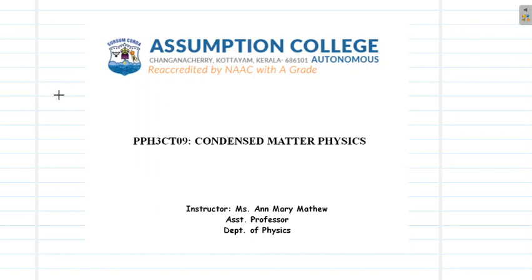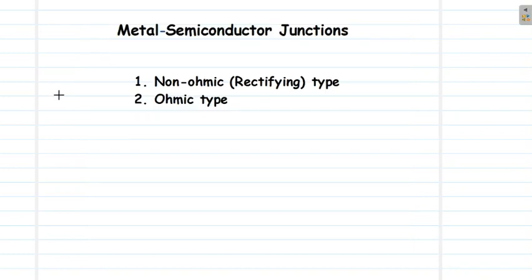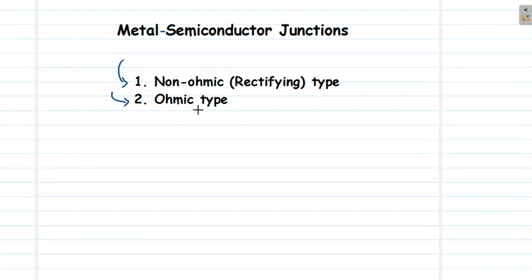In today's video, let us learn about metal-semiconductor junctions. These junctions are formed at the interface of metals and semiconductors and can be broadly formed in two different types: a non-ohmic or rectifying type, or an ohmic type. These types of junctions are formed depending on the type of materials used.